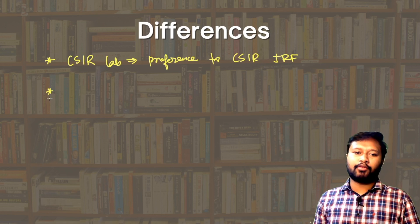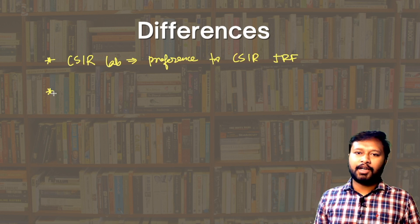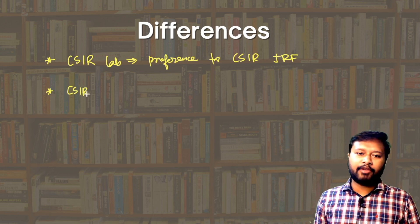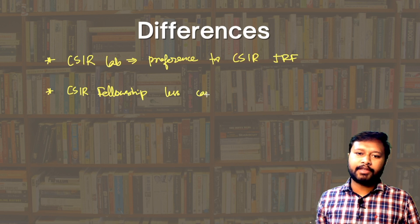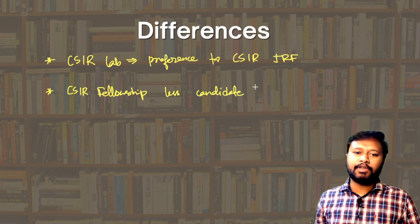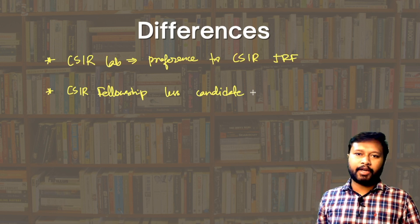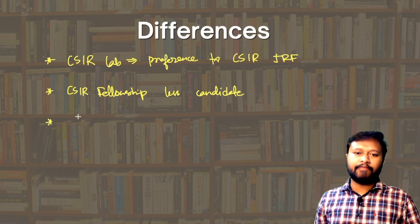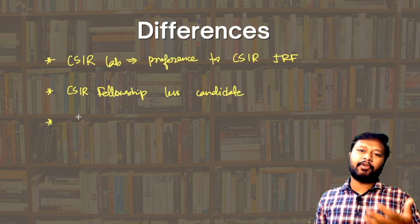The second difference is in the number of candidates who receive these fellowships. CSIR JRF is given to a smaller number of candidates, whereas UGC JRF is awarded to a larger number of candidates.